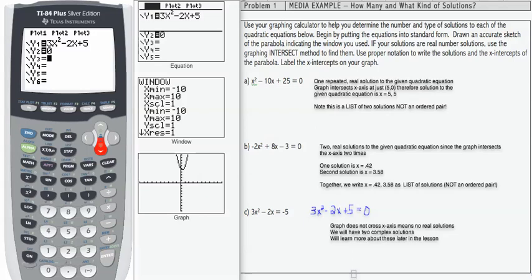So in the white space, I've indicated the graph does not cross the x-axis. That means we have no real solutions. However, we will have two complex solutions. We'll learn more about these later in the lesson.